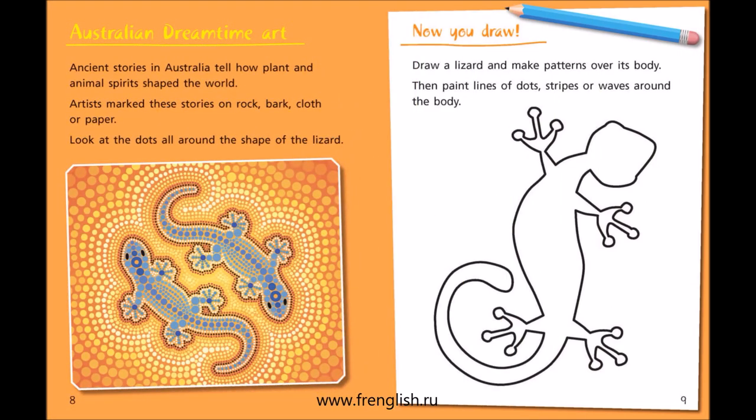Australian Dreamtime Art. Ancient stories in Australia tell how plant and animal spirits shaped the world. Artists marked these stories on rock, bark, cloth or paper. Look at the dots all around the shape of the lizard. Now you draw: draw a lizard and make patterns over its body. Then paint lines of dots, stripes or waves around the body.